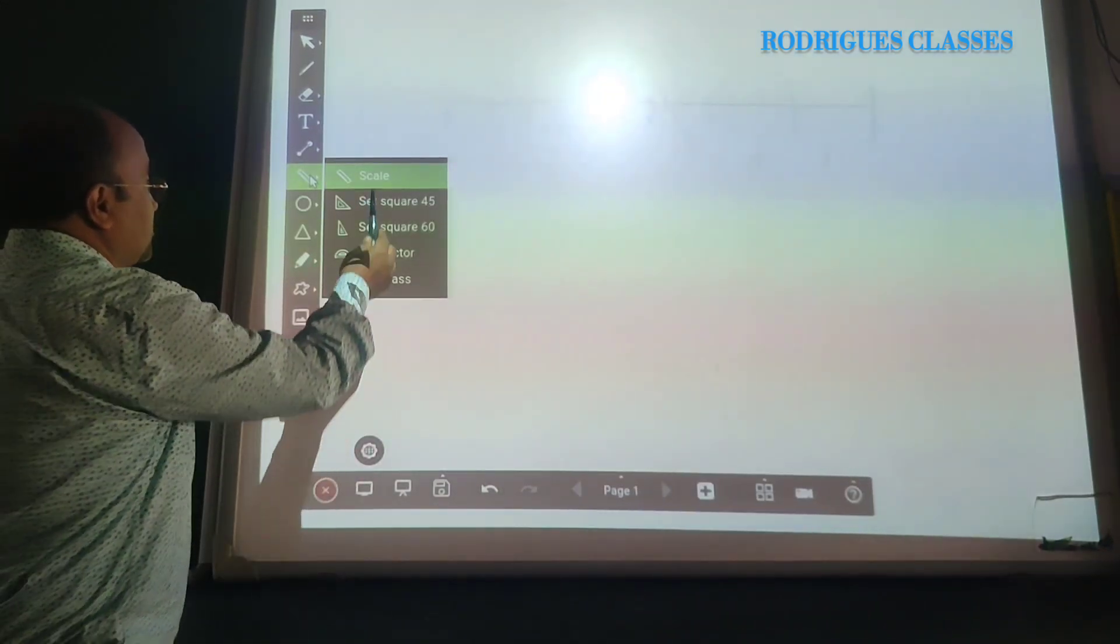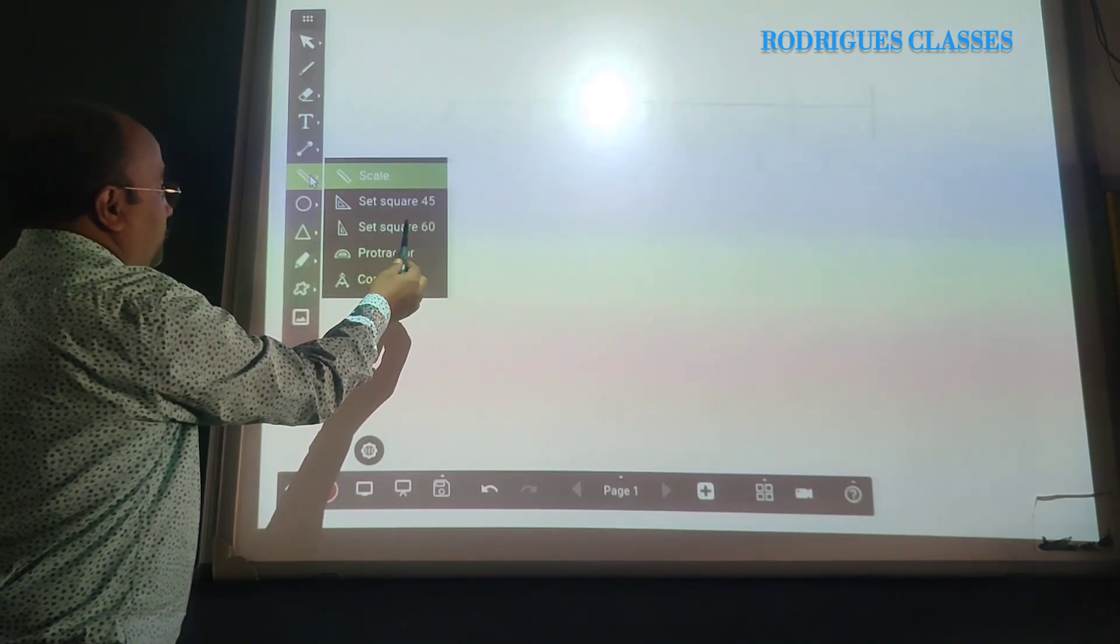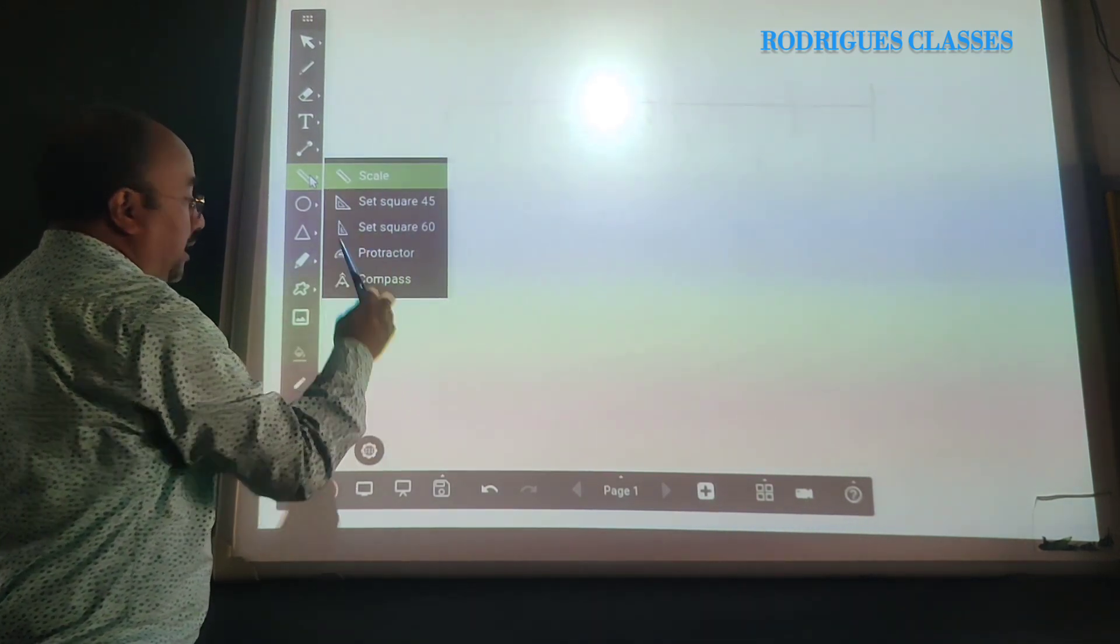From this, we can get a scale, set square 45, set square 60, protractor and compass.